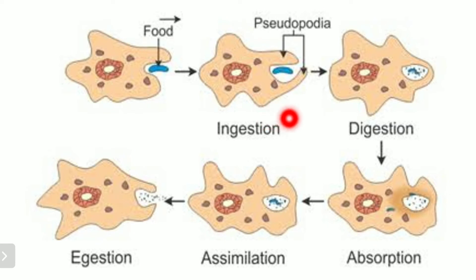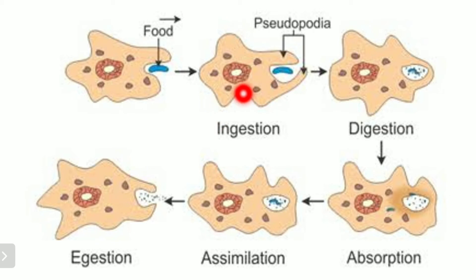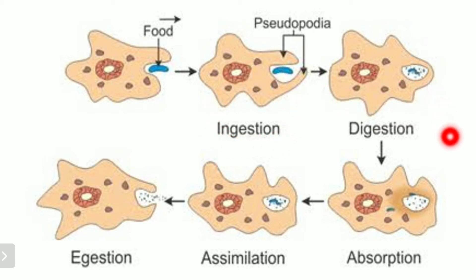There are 5 steps in amoeba's nutrition. The first step is ingestion, which is the intake of food. So the ingestion process has been completed — food has been taken in. Now the body of amoeba starts the next step.